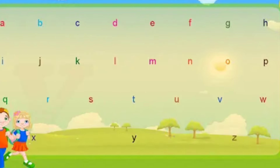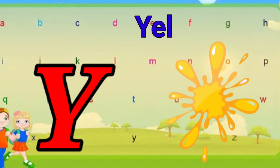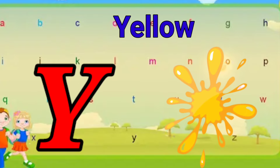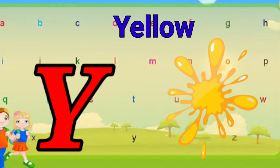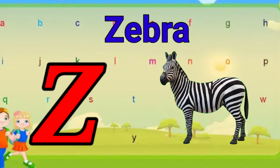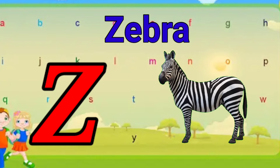Y is for yellow, ye-ye-yellow. Z is for zebra, z-z-zebra.